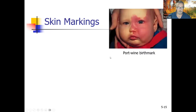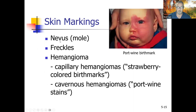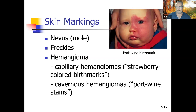Skin markings: a port wine birthmark is one example. Moles are scientifically called nevus. Freckles are concentrations of pigment. Hemangiomas are areas where blood vessels are swollen — capillary hemangiomas are strawberry-colored birthmarks (pinkish, small), while cavernous hemangiomas or wine stains are where large areas of skin fill up with blood, leaving a much darker color.